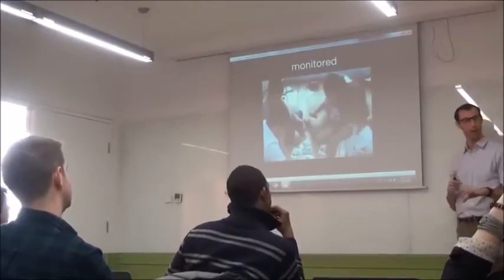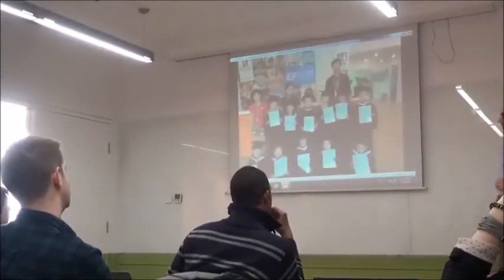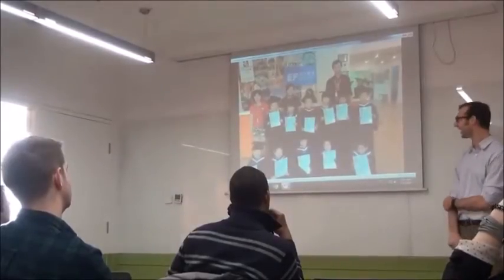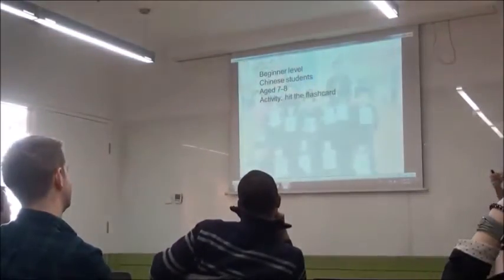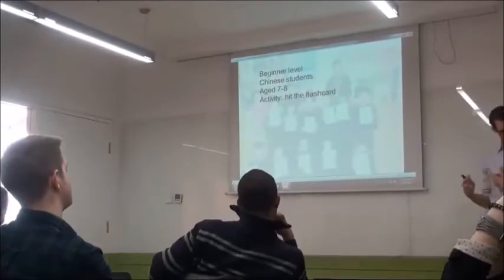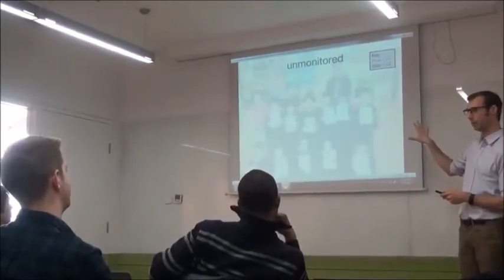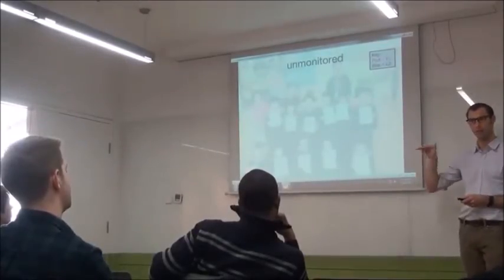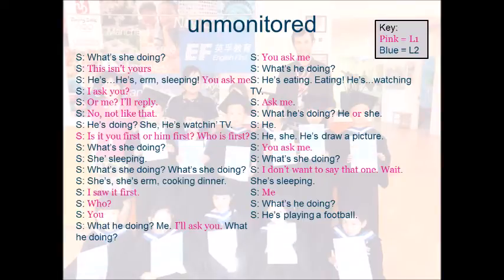To investigate, I would set up a group work activity, leave my phone next to one of the groups, and then walk away to the other side of the room. The first group I did this with were beginner Chinese students, about seven to eight years old. It was a hit-the-flashcard activity where they asked each other 'what's he doing?' or 'what's she doing?'. After class, I transcribed what the students said — Chinese in pink and English in blue — and I'll ask you to look for a pattern in how they used the two languages.